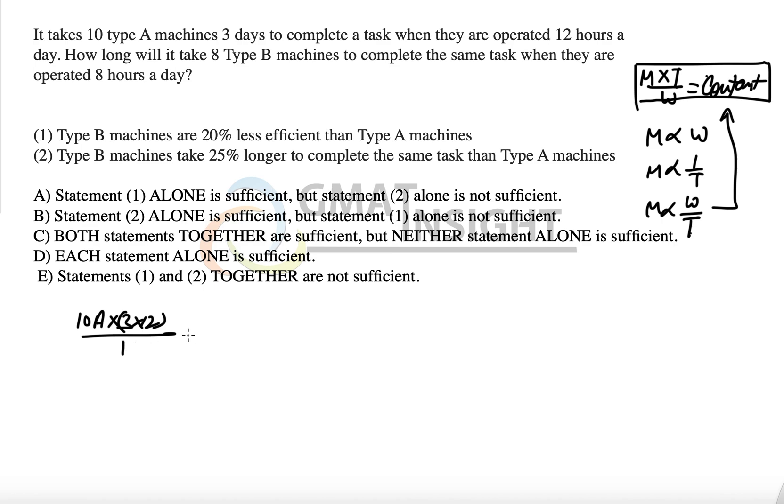To complete one task, how long will it take eight Type B machines? And we have to find out the time if the machines are operated eight hours a day, that means we have to find the number of days if they are operating eight hours in a day and we have to finish the same work. So in order to answer this question, we have to find out D.